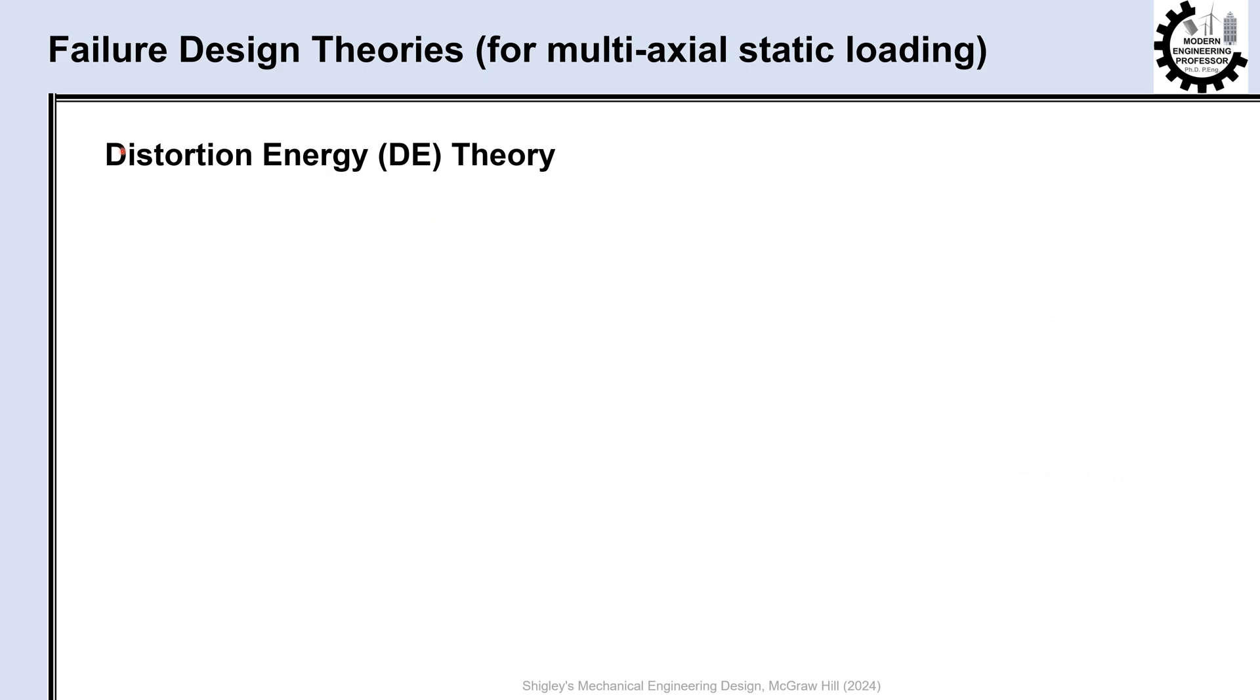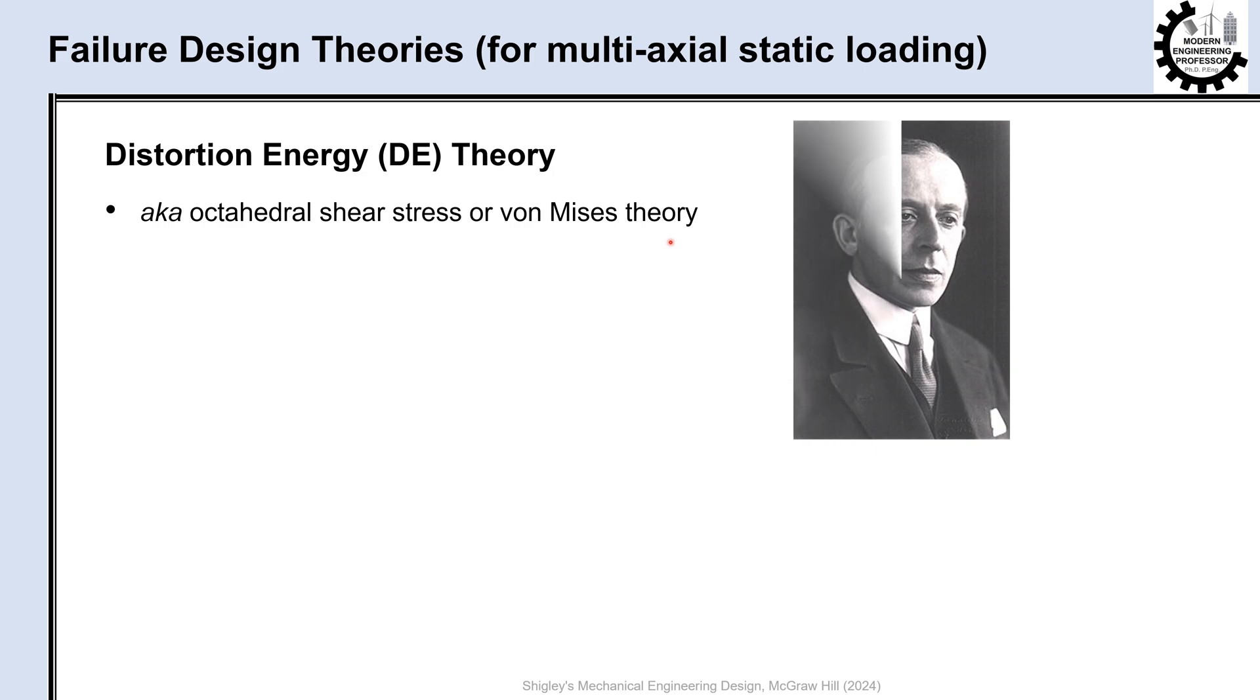The next failure theory that we discuss is the distortion energy, or DE, theory. This theory is also called octahedral shear stress or von Mises theory, named after Richard von Mises, who formulated the theory in 1913.